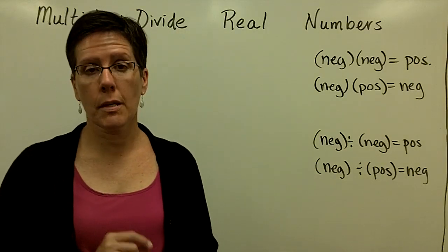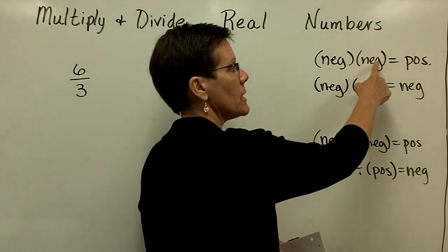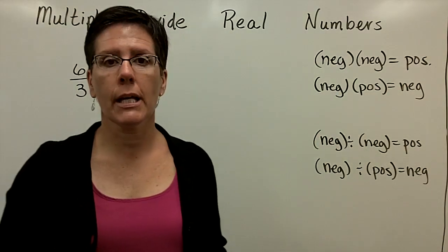Division of real numbers follows the same rules as multiplication of real numbers, in that a negative times a negative is equal to a positive, and a negative times a positive is equal to a negative. Here's why.